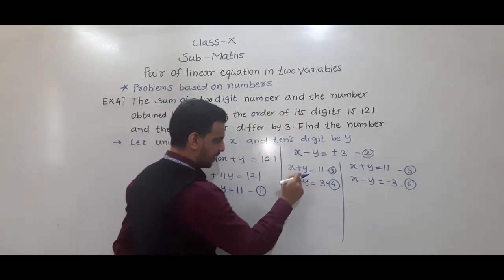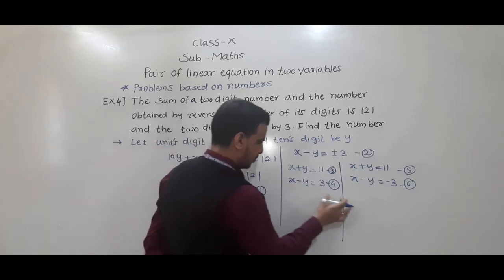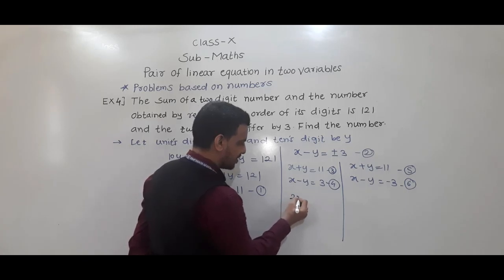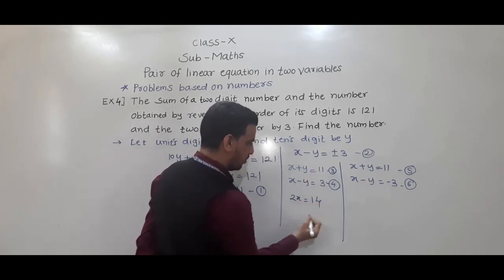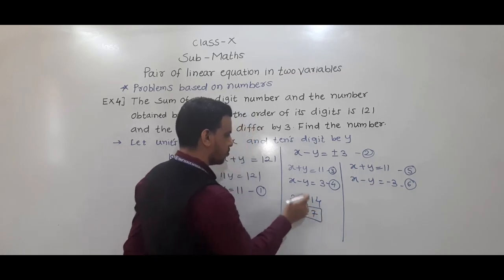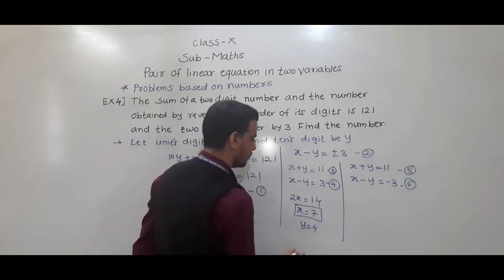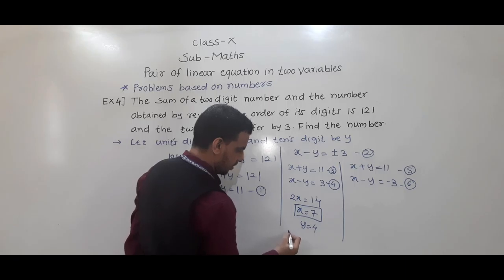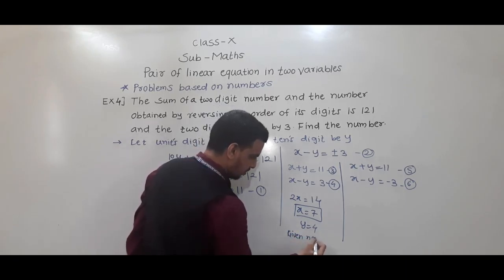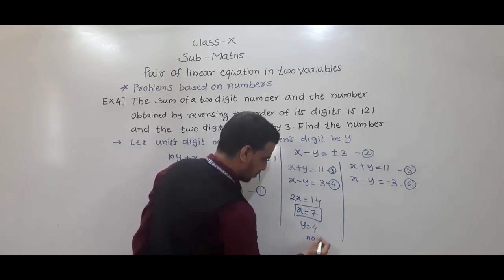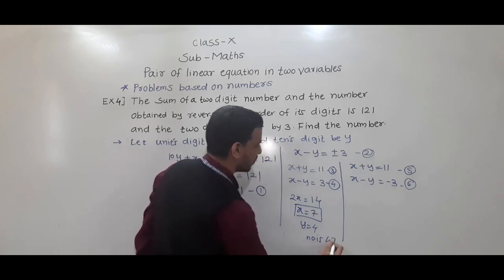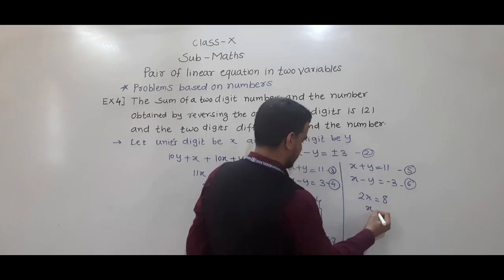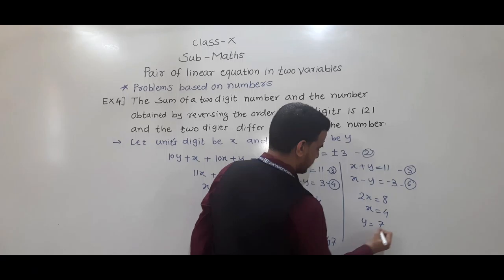Solving the first set — equations x plus y equals 11 and x minus y equals plus 3: adding gives 2x equals 14, so x equals 7. Substituting back gives y equals 4. So the number is 10y plus x, which is 10 into 4 plus 7, equals 47. Solving the second set — x plus y equals 11 and x minus y equals minus 3: adding gives 2x equals 8, so x equals 4. Then y equals 7, giving the number 74.